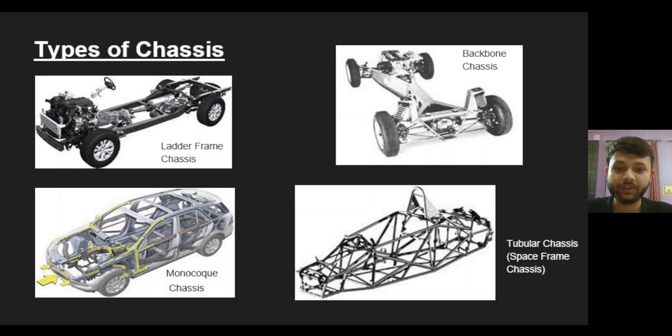The next type of chassis is the backbone chassis. It also gets its name from its construction and it's present in cars like the Skoda Rapid. One of the advantages of this type of chassis is that the cylindrical tube actually covers your drive shaft, thus protecting it. The third type of chassis is the monocoque chassis, which means a unibody structure.